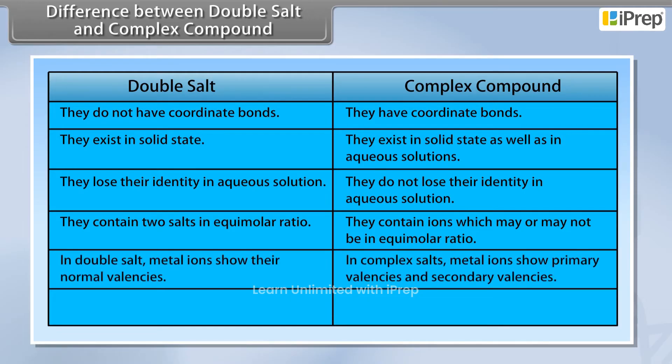In double salt, metal ions show their normal valencies, whereas in complex salts, metal ions show primary valencies and secondary valencies.